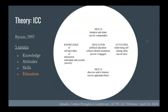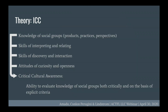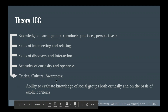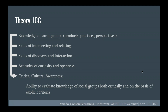In Byram's model, we see five savoirs: knowledge, attitudes, and two different skill sets, with education at the center. That's really important because the attitudes, knowledge, and skills enable the student to have this education — what he refers to as critical cultural awareness, which is also the term you saw in the title of this presentation. It is the development of knowledge, attitudes, and skills that bring about critical cultural awareness, and it's part of our job as educators to get our students there.